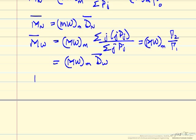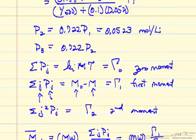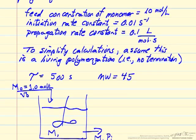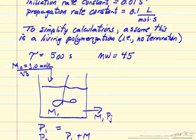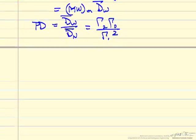The final term we want to calculate is the polydispersity, which is an indication of the spread in the distribution — how broad is it? It's just the ratio of the weight-average to number-average molecular weight, which in terms of moments is γ₂·γ₀ over γ₁². We'll use a spreadsheet to do the calculations for this particular example, where we have a molecular weight of 45 and the numbers already used in the calculations.